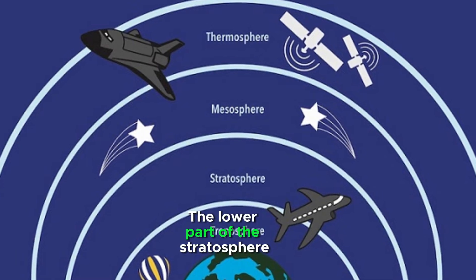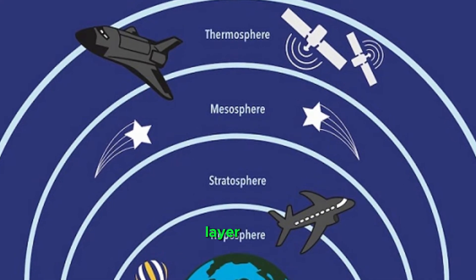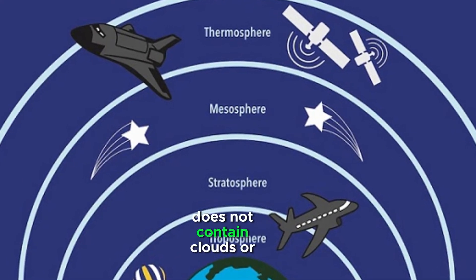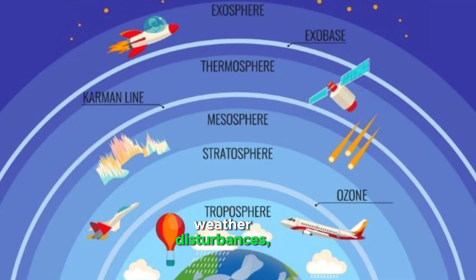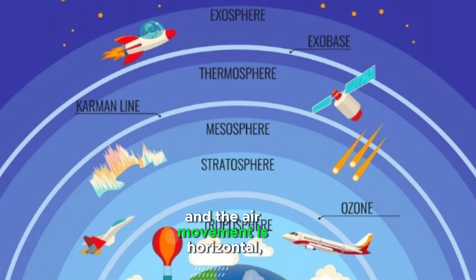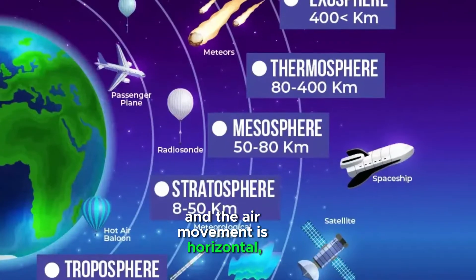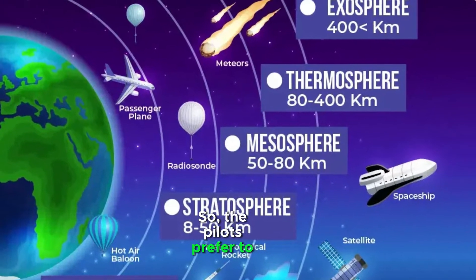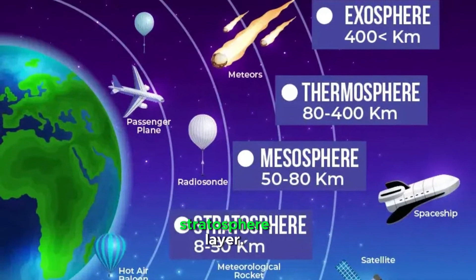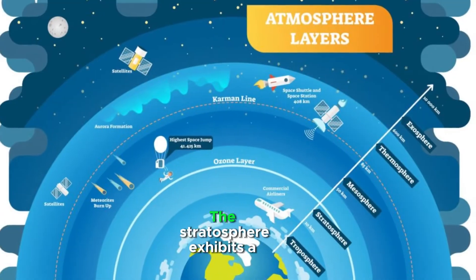The lower part of the stratosphere layer does not contain clouds or weather disturbances, and the air movement is horizontal, so the pilots prefer to fly their planes in the stratosphere layer.